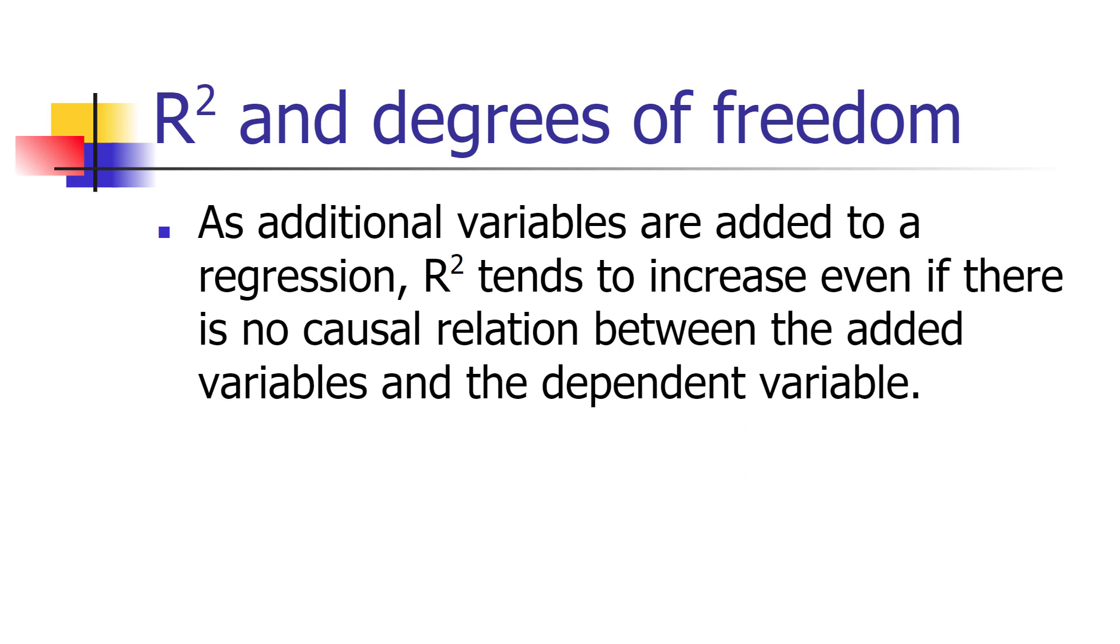Consider, for example, a bivariate regression relationship. If you only have two observations, you will always be able to get an R-squared of 1, because you can always draw a line that will go through two points with no error terms.